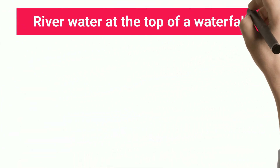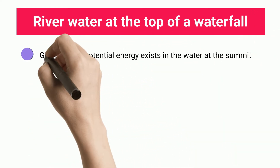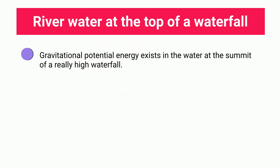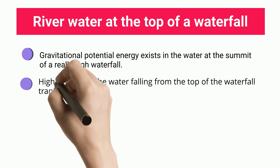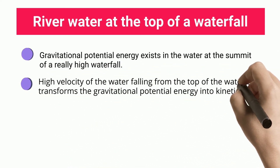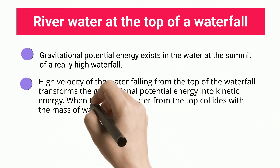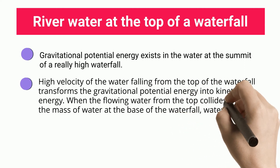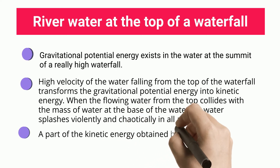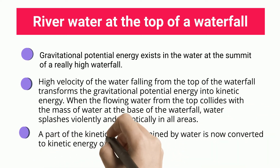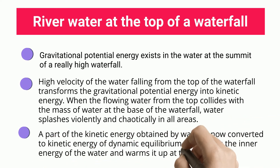Gravitational potential energy exists in the water at the summit of a high waterfall. The high velocity of water falling from the top transforms the gravitational potential energy into kinetic energy. When the flowing water from the top collides with the mass of water at the base, water splashes violently and chaotically. A part of the kinetic energy is converted to thermal energy, raising the inner energy of the water and warming it up at the bottom of the falls.